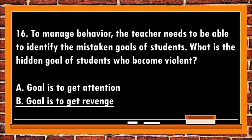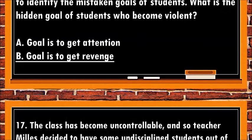The best answer is b. Goal is to get revenge. For the mistaken goal of revenge, the student believes that when they get hurt, they end up hurting others. It can be difficult to understand the mistaken goal of revenge because too often we have no idea where hurt feelings come from. A student may be hurt by something that happened at home, in another class, or with his or her peers, and then takes it out on the teacher.